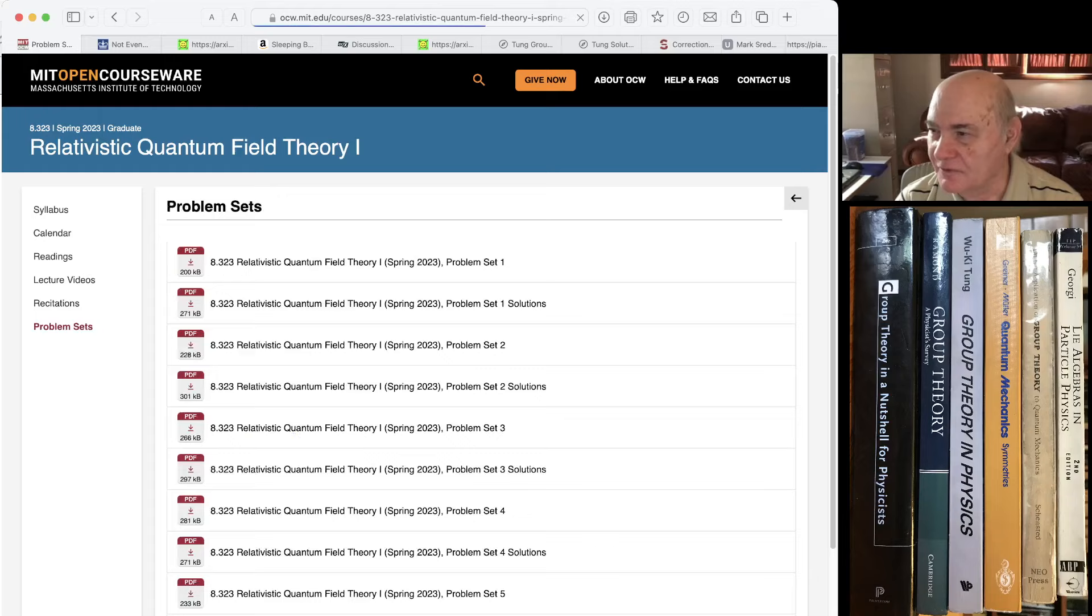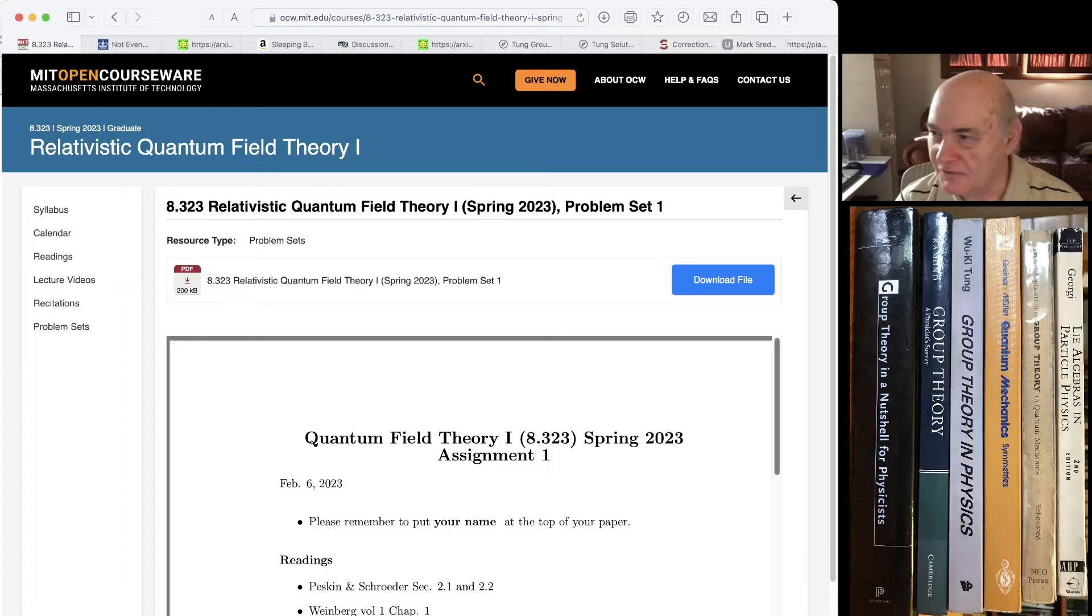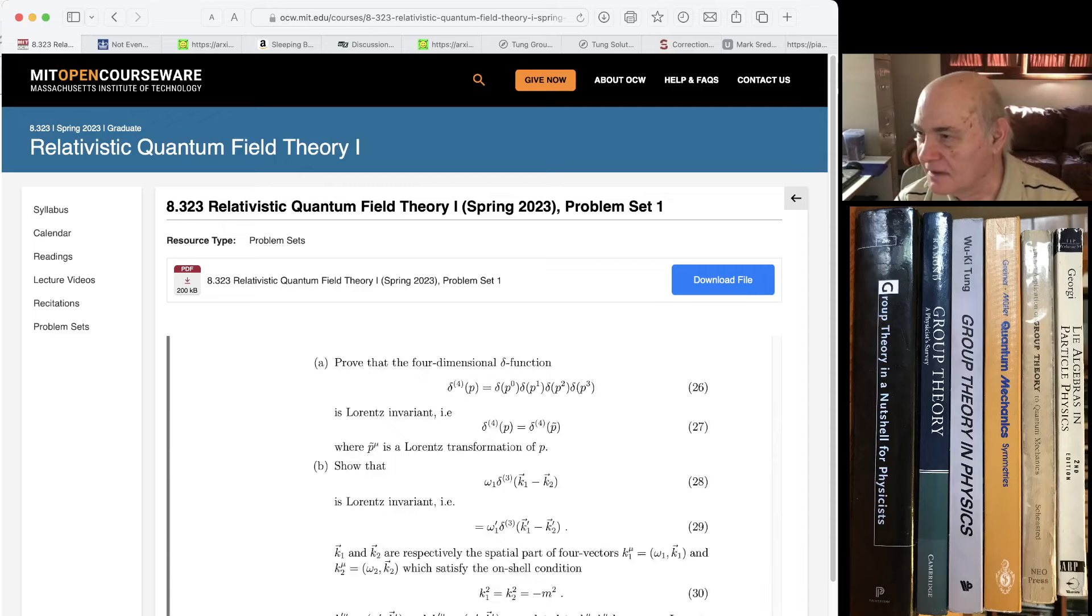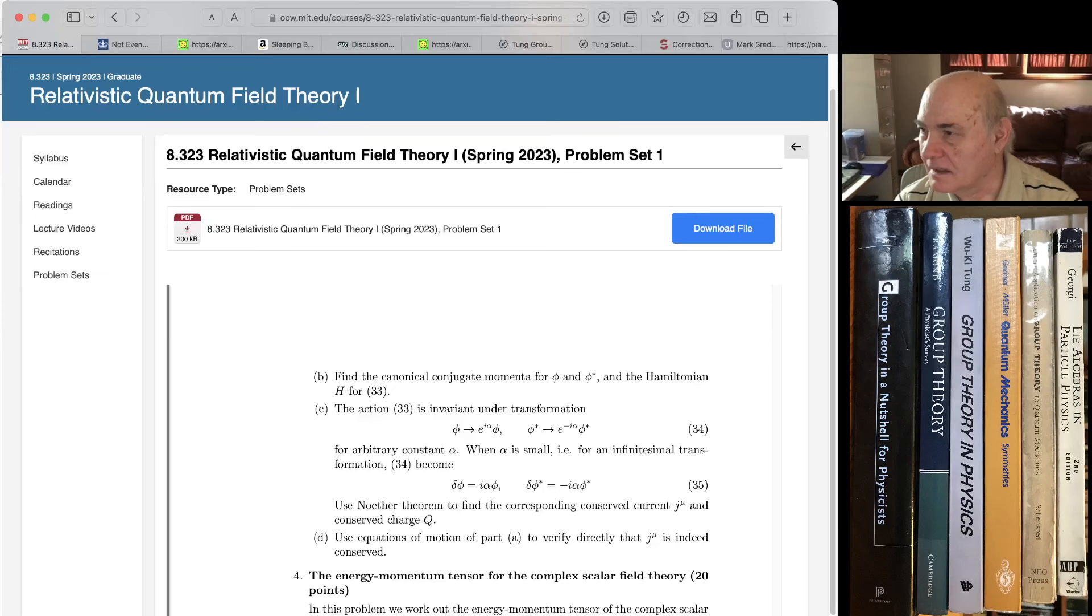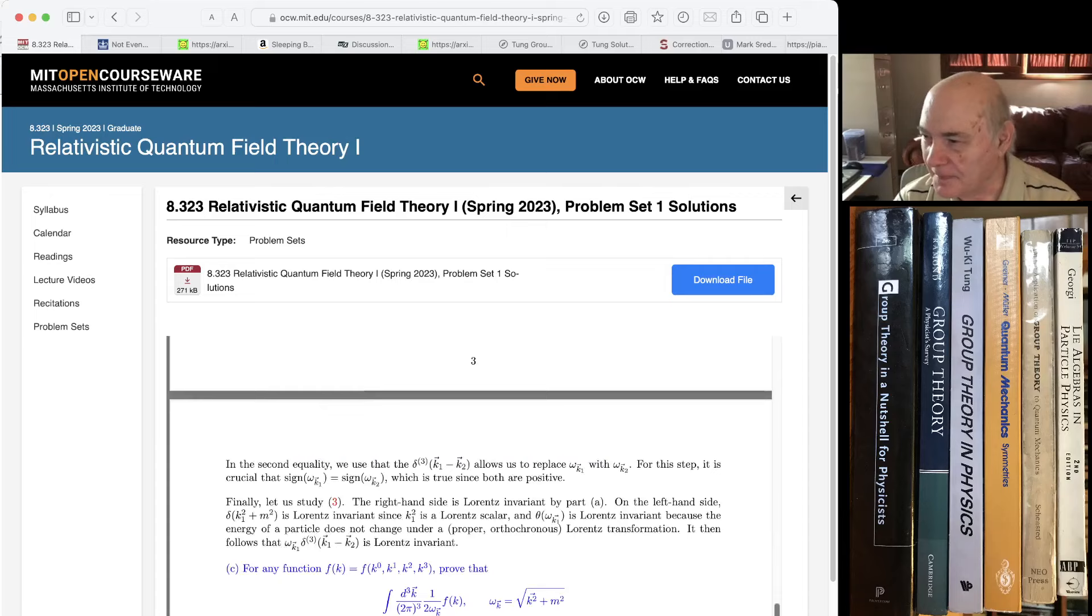And they have the problem sets with all the solutions. So there are about 10 problem sets, and they have the actual assignment, and then the answers are there. Students are always complaining they want answers. So this might be, if you're looking for a beginning quantum field theory course, this might be as close to a MOOC as you can get online right now.